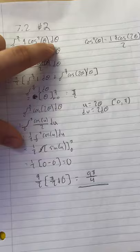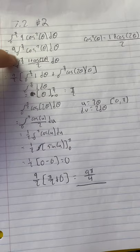From there we just took out the 9 to make it 9 integral from 0 to pi over 2 of cosine squared theta.